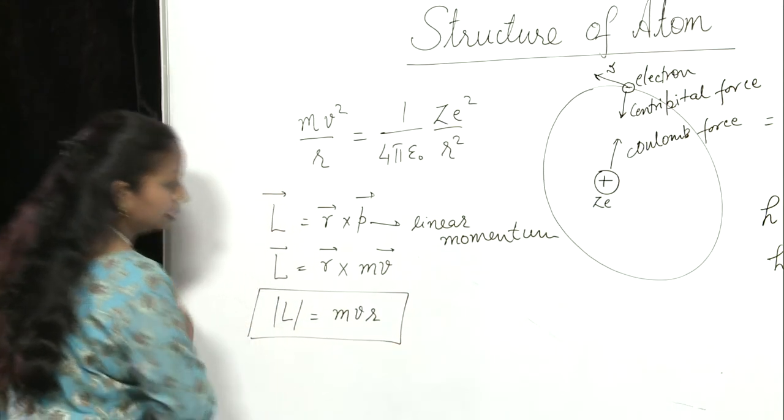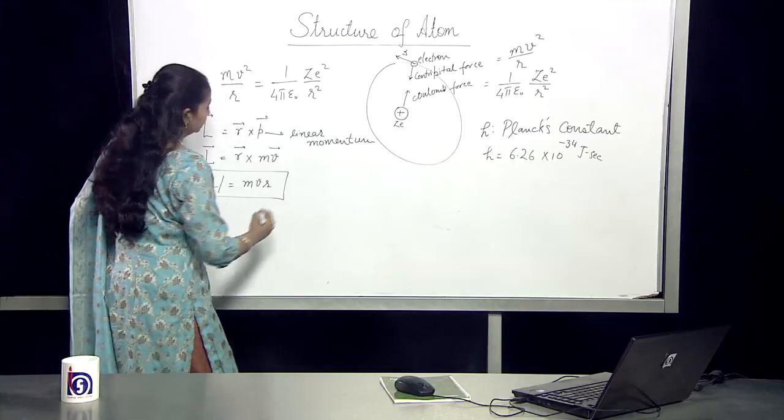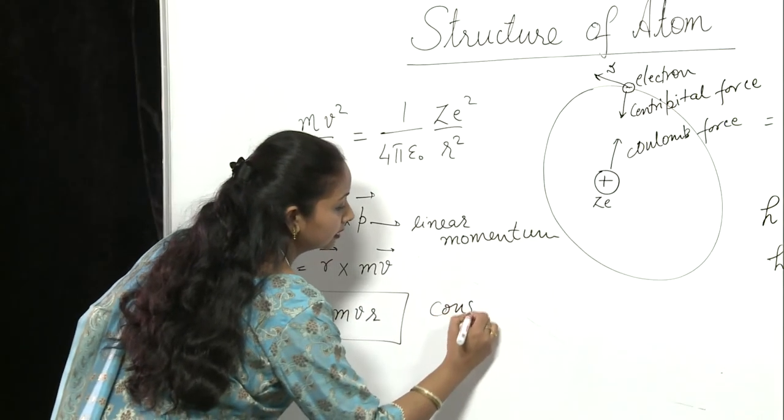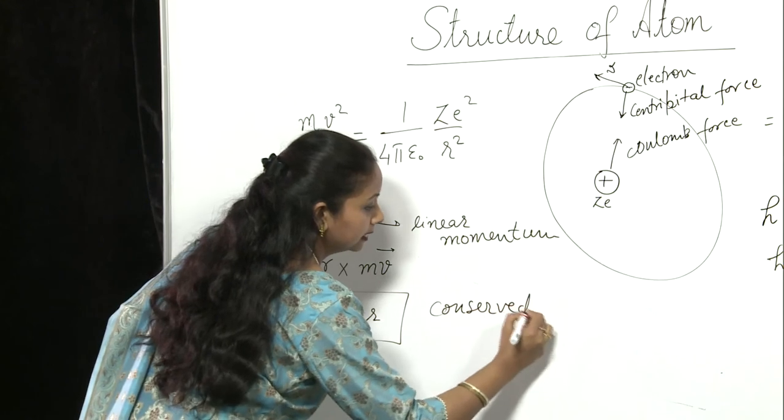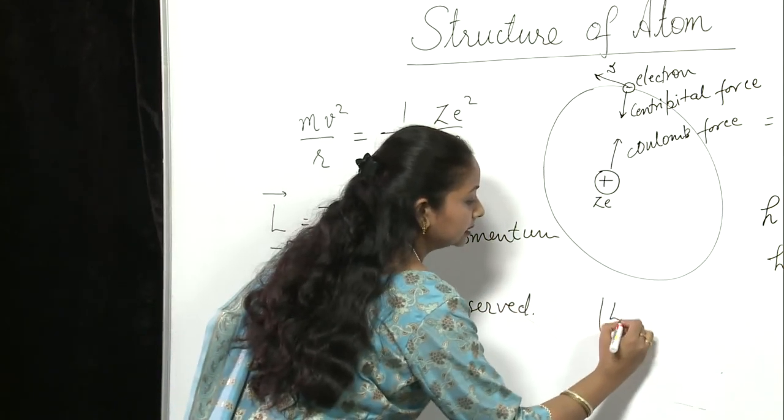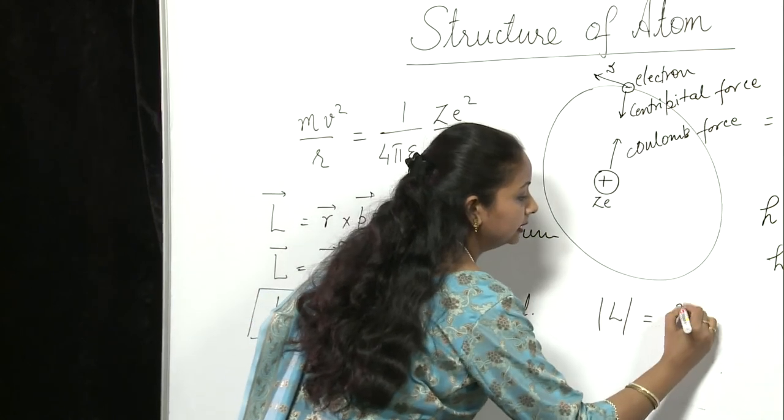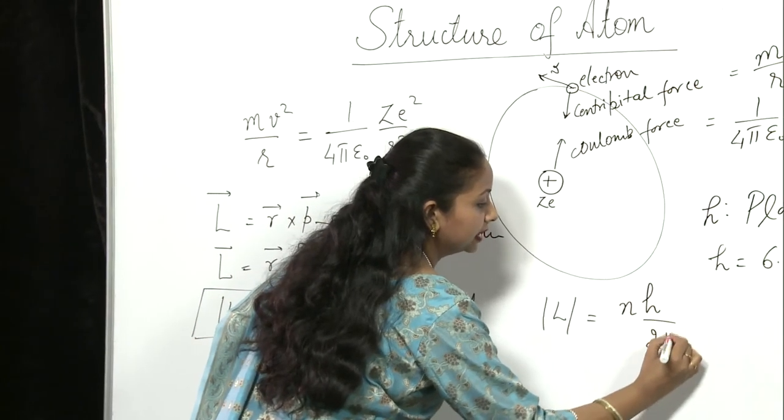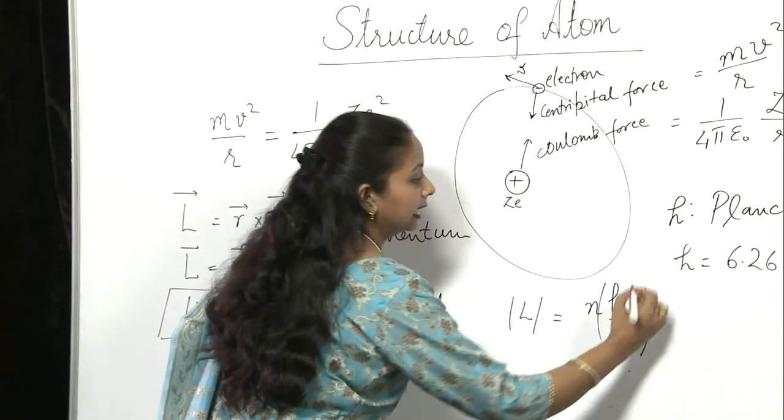As we know that orbital angular momentum should be conserved. And according to Bohr this magnitude of orbital angular momentum is the integral multiple of h/2π and again this h is Planck's constant.